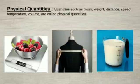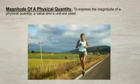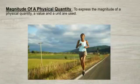Thus we can say that quantities such as mass, weight, distance, speed, temperature, volume are called physical quantities. The magnitude of a physical quantity represents the amount contained in the quantity. A value and a unit are used to express the magnitude of a physical quantity. For example, 2 is the value and kilometer is the unit.